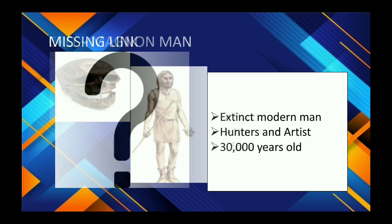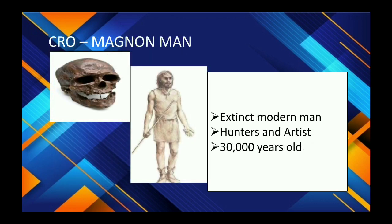Next is Cro-Magnon Man — an extinct modern man who were hunters and artists, living 30,000 years ago in caves. Their cranial capacity was 1,650 cc. They had an orthognathous face, narrow nose, broad arched forehead, moderate brow ridge, strong jaw with man-like dentition, and a well-developed chin. They were the direct ancestors of living modern man.